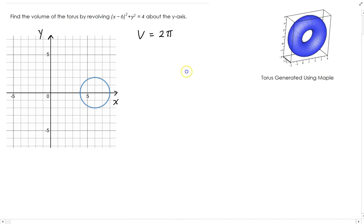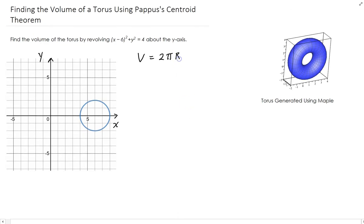R is the radius of the volume, and A is the area of that region. In this case, the centroid for this circle that we're given is actually right here at 6, 0. That means the radius for this volume is going to be 6.